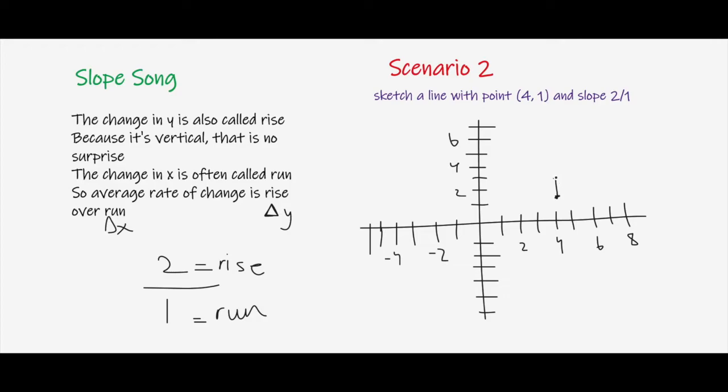And then the change in x is called run and that's just 1. So you shift this point again to the right by 1 and you get this point right here, which is (5,3). I'm going to write (5,3) over here. That's the new point.